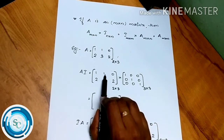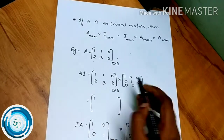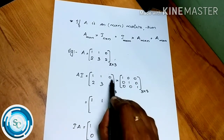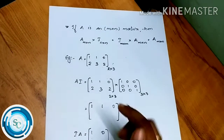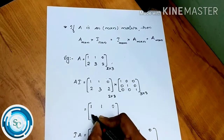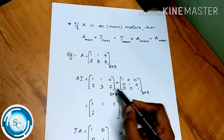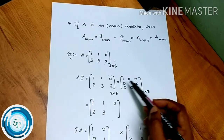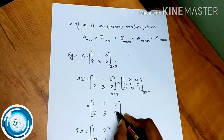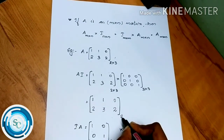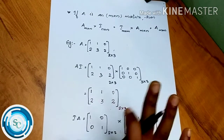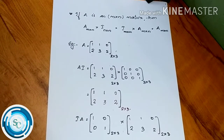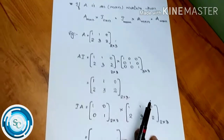We compute A·I_3: 1×1 + 0 = 1; 1×0 + 1×1 + 0 = 1; second row: 2×1 + 0 = 2; 3×0 + 3×1 = 3; 2×0 + 2×1 = 2. The result is the original 2×3 matrix. Now we will compute I_2·A.